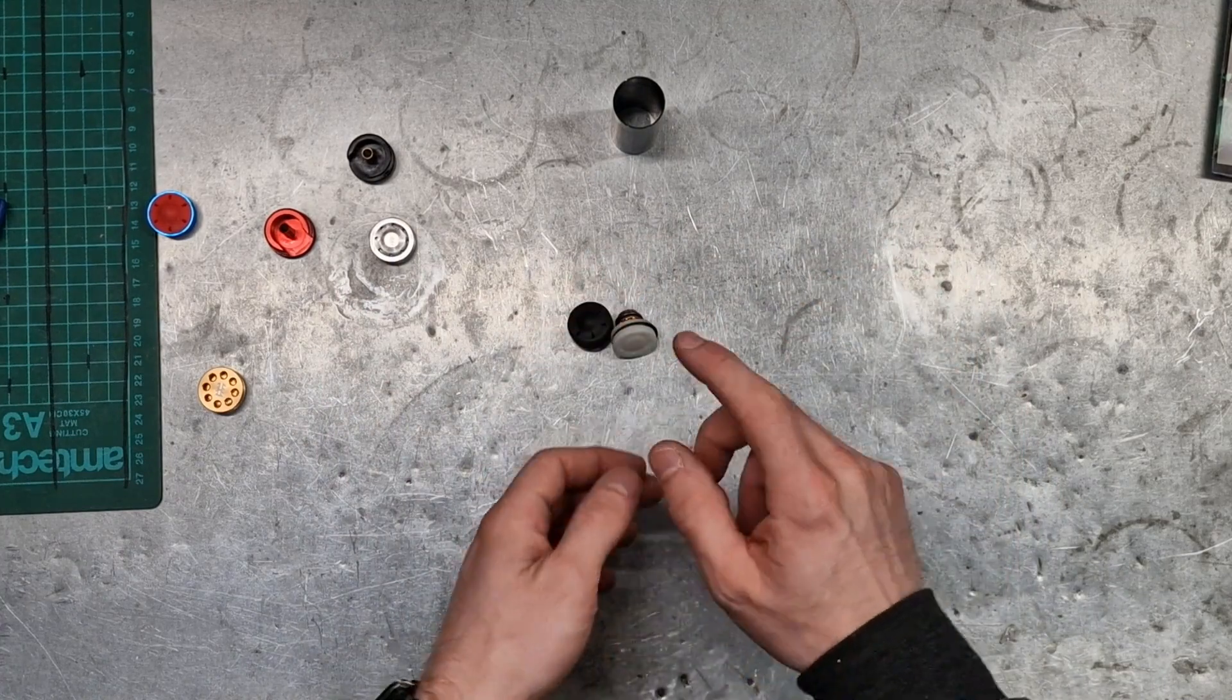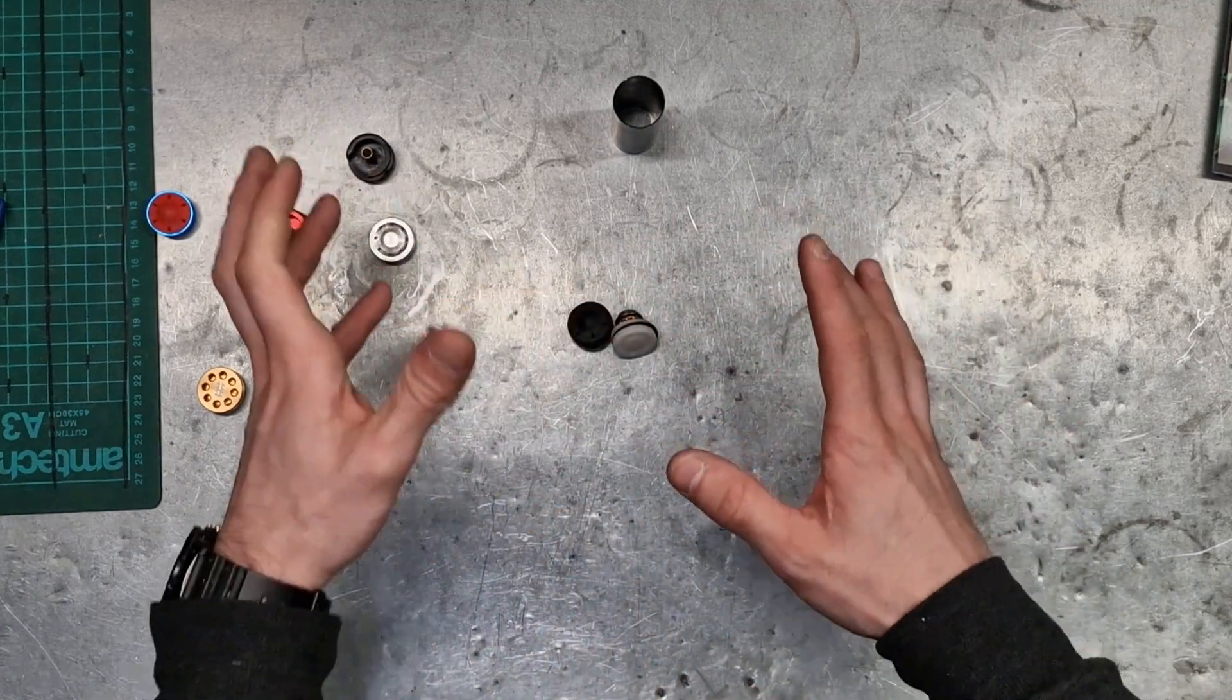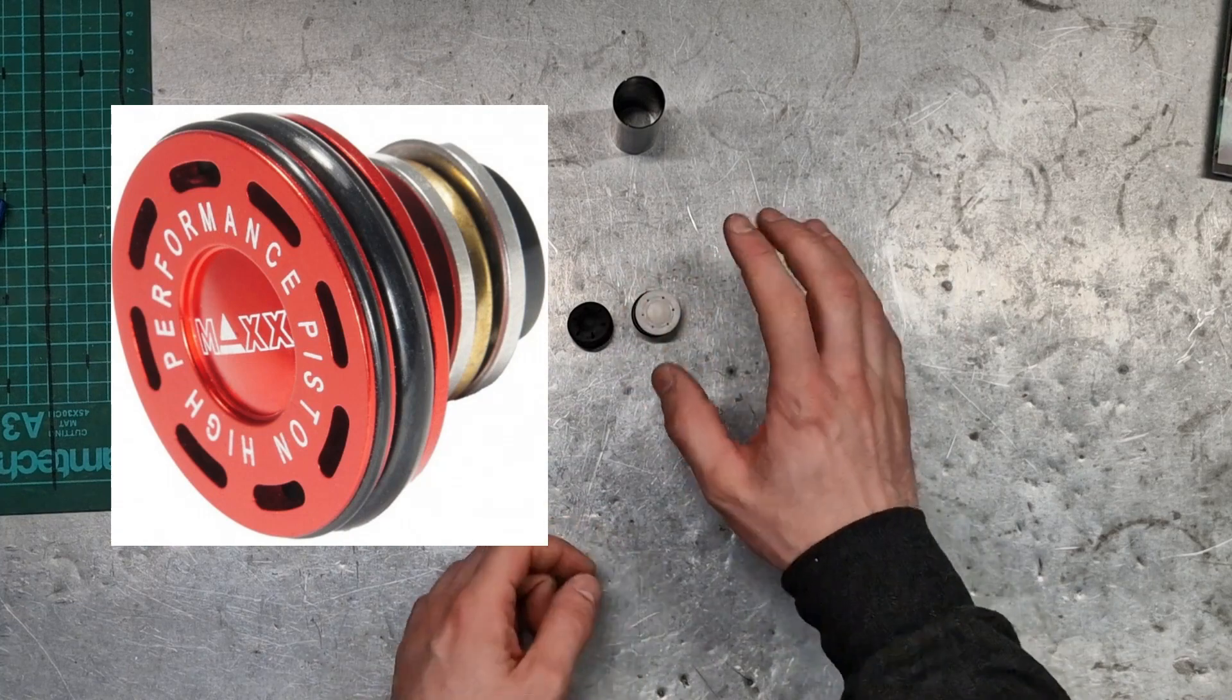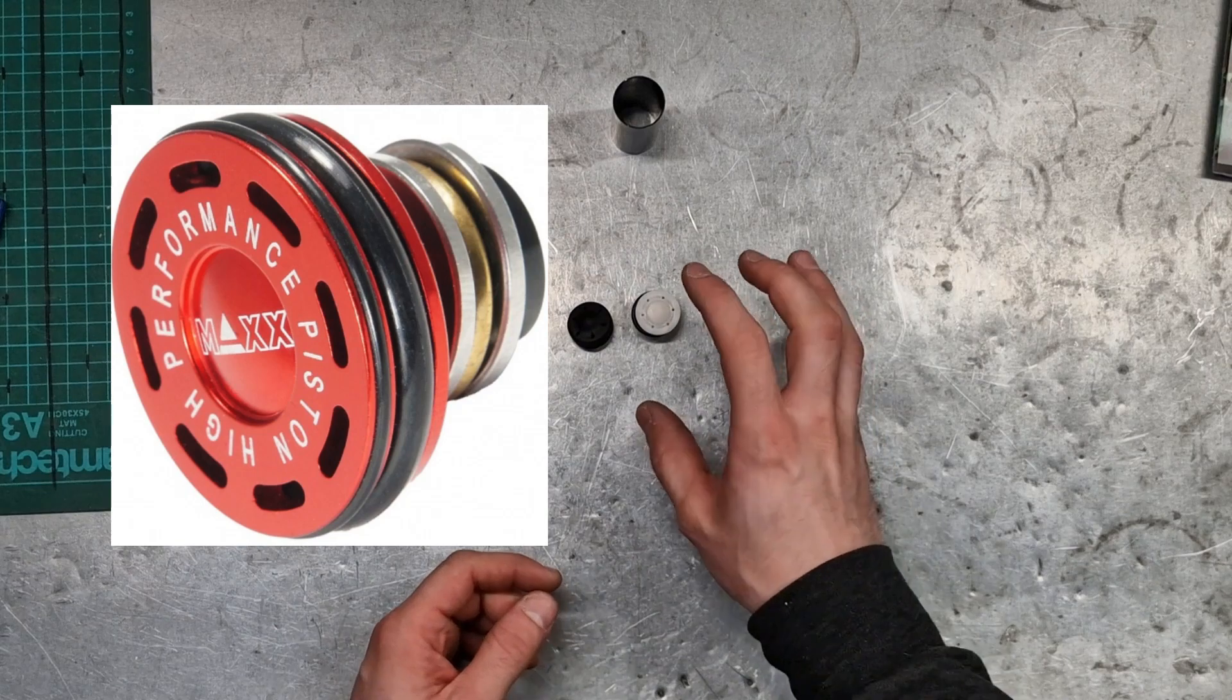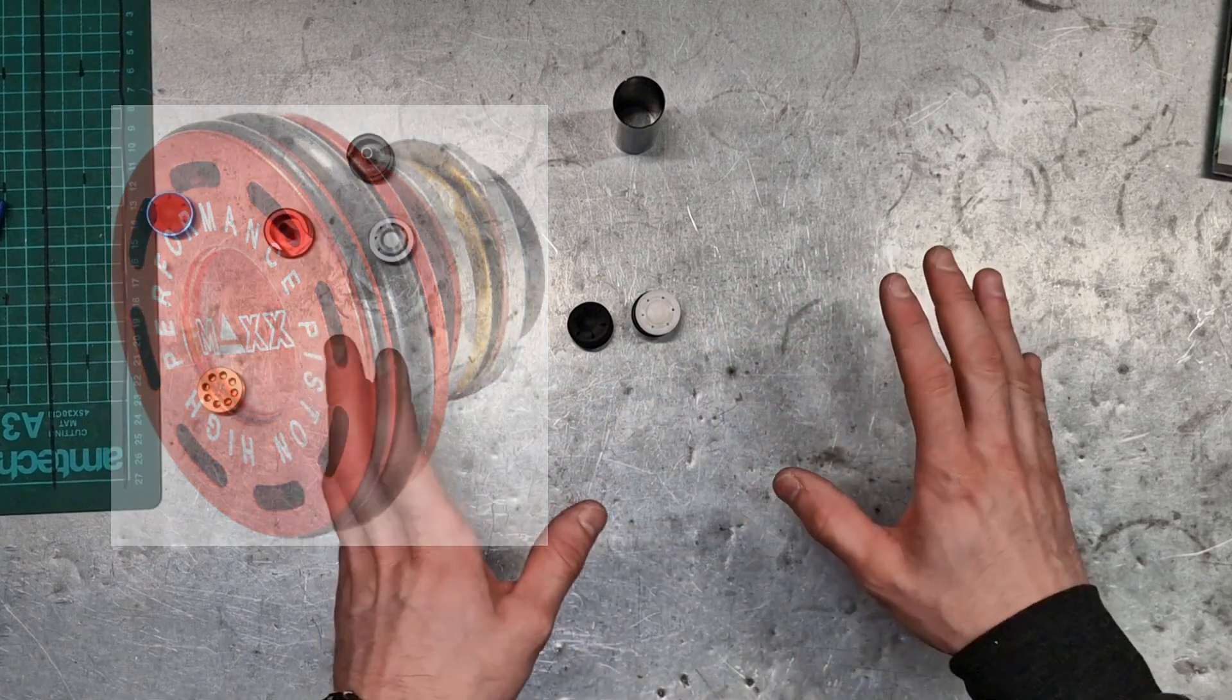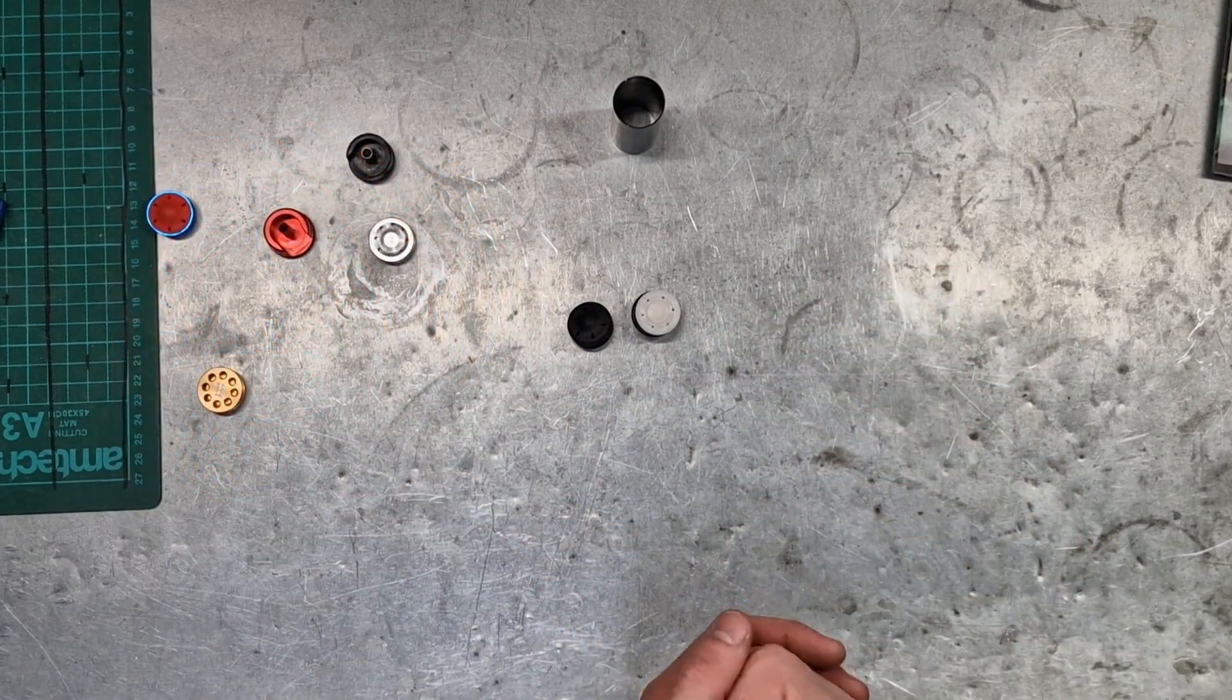Now if you do insist on having a metal one, say a DMR build, something slightly lower rate of fire, you can get, I know Max Model do one, a double o-ring piston head. That'll be nice and reliable, give you a really nice consistent air seal. But for high rate of fire a double o-ring can cause a few issues, keep that in mind. That's all my tech tips for today, I'll get another one done as soon as I get a minute. Cheers chaps.